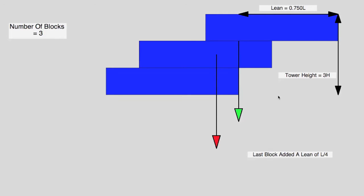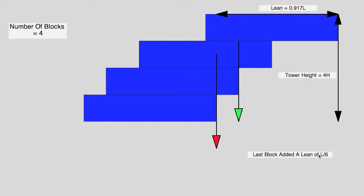So let's add another block. So the center of mass of this structure now is here, adding another block. And here we go, now this time we only got L over 6, and you might be seeing a pattern here. Now we've got a tower height of 4 and we have a lean of 0.7, so we're nearly at a whole length of lean with only 4 blocks. So let's add another one.